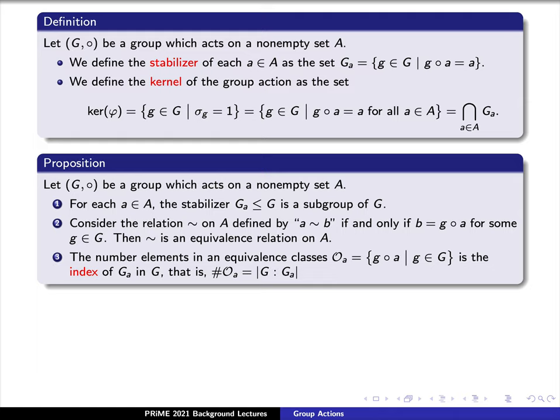Here's the main result putting all of this together. Again, say that we have a group which acts on a non-empty set capital A. For each element lowercase a in our set capital A, the stabilizer G sub a is a subgroup of capital G. Let's consider the relation tilde on our set A, which is defined by saying lowercase a is related to lowercase b if and only if b equals g times a for some element lowercase g in our set capital G. Then tilde defines an equivalence relation on the set capital A. Finally, the number of elements in this equivalence class, which we denote by script O sub a, is the index of the stabilizer in our group. That is, the number of elements in the equivalence class script O sub a is the index of G sub a in the group capital G.